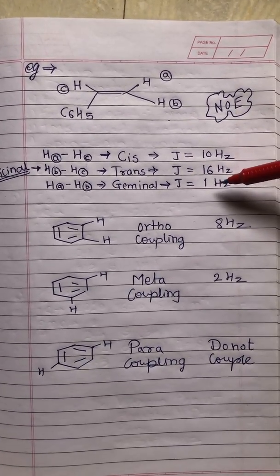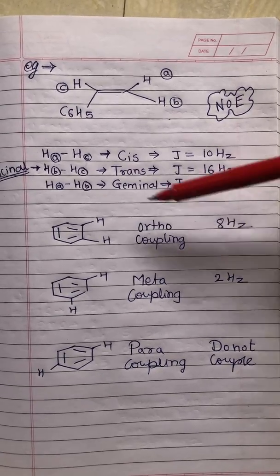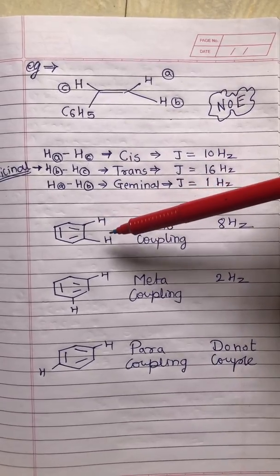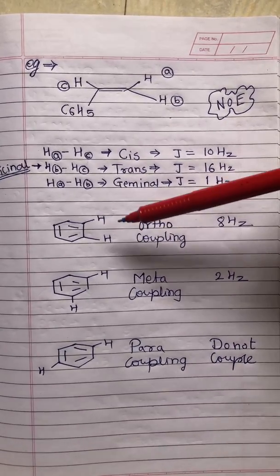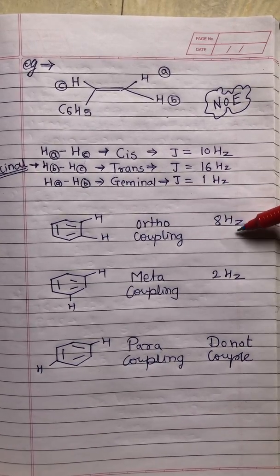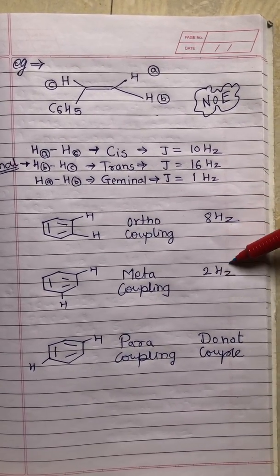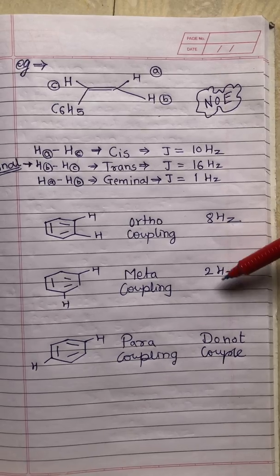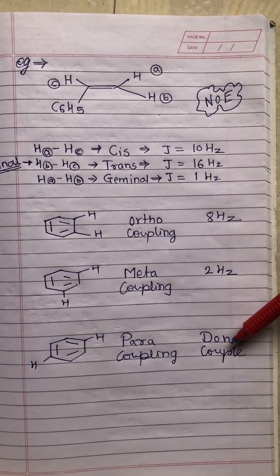This coupling constant also exists in the benzene ring. If the protons are ortho to each other, this value is 8 Hertz. If meta, its value is 2 Hertz. If they are para, the protons are far enough so they do not couple.